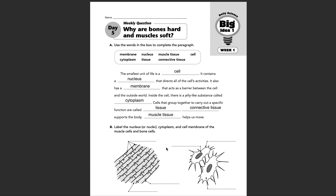Part B wants us to label the nucleus or nuclei, cytoplasm, and cell membrane of the muscle cells and bone cells. We know that this is a muscle cell and this is a bone cell. A muscle cell has more than one nucleus, so that would be nuclei. When it's pointing to several different locations, those would be the nuclei.